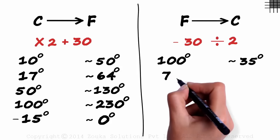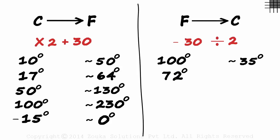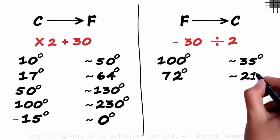What about 72 degrees Fahrenheit? Subtract 30 and get 42. 42 over 2 is 21. 72 degrees Fahrenheit is approximately equal to 21 degrees Celsius.